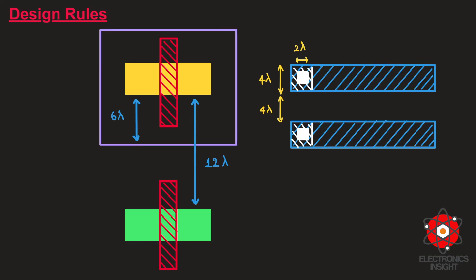A wiring track is the space required for all wiring connections. It should be maintained with a 4 lambda width and 4 lambda spacing from the neighbor, so totally 8 lambda — 4 lambda width and 4 lambda spacing between two different wiring tracks. Finally, the contact width has to be maintained as 2 lambda.